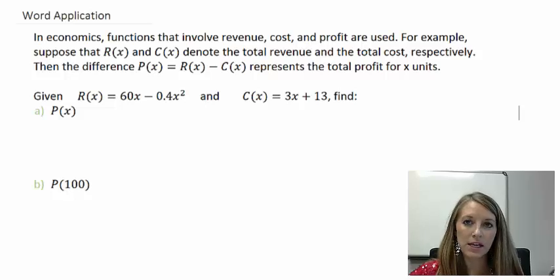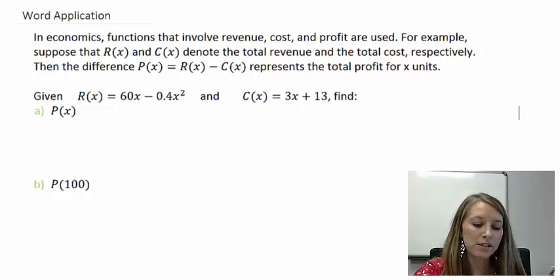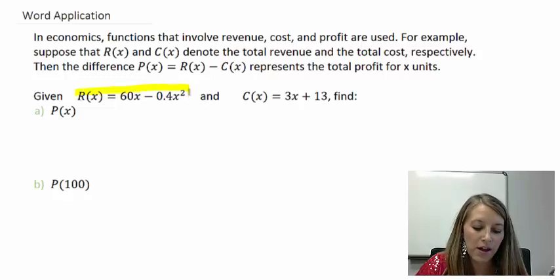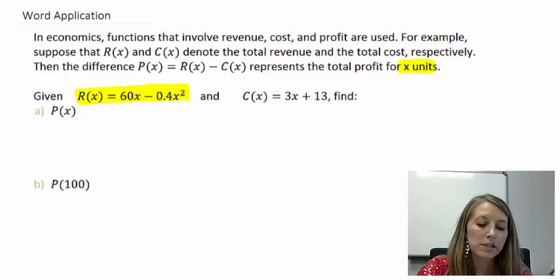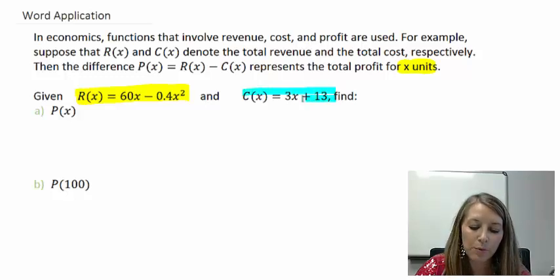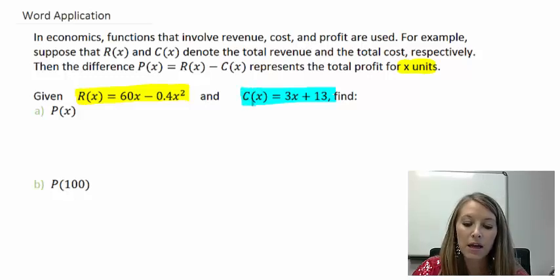In this example here, they give us that our revenue equation is defined as 60X minus 0.4X squared. So that's defined as the money that we're bringing in if we are referencing X as a number of units. Our C of X, the cost function, is 3X plus 13.